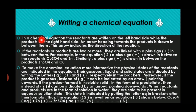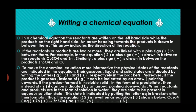In a chemical equation, the reactants are written on the left hand side, while the products are on the right hand side, and an arrow heading towards the product is drawn in between them. This arrow indicates the direction of the reaction. So on the left hand side we write the reactant, on the right hand side we write the product, and the arrow in between indicates the direction of the reaction.